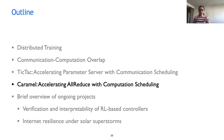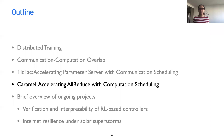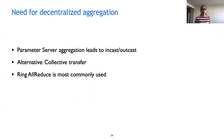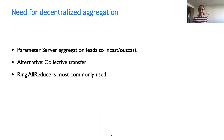Next we discuss Caramel, a system that addresses centralized aggregation in the all-reduce setting where we do not have a centralized location like a parameter server to enforce ordering. We tackle the same problem in the decentralized setting using computation scheduling. Today most platforms like TensorFlow and PyTorch are moving to decentralized aggregation as the default mode, since the parameter server setting suffers from in-cast and out-cast — all workers send updates for a given parameter to the same node, causing congestion. The alternative is collective transfer, and the most common mode is ring all-reduce.